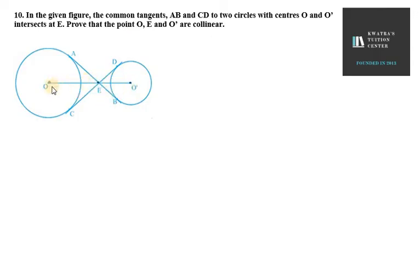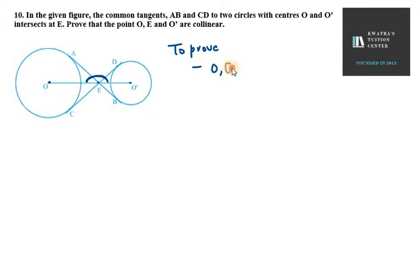We have to prove that the points O, E, and O' are collinear. Collinear means they lie on a straight line, so we have to prove that the angles sum to 180 degrees.